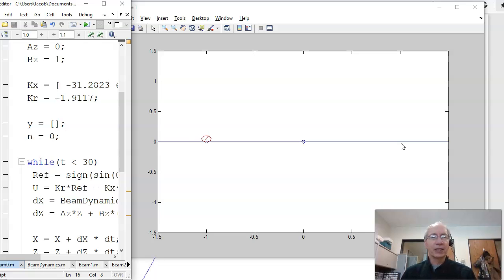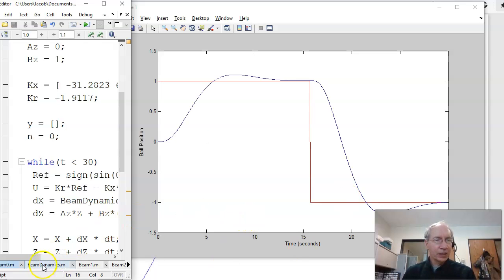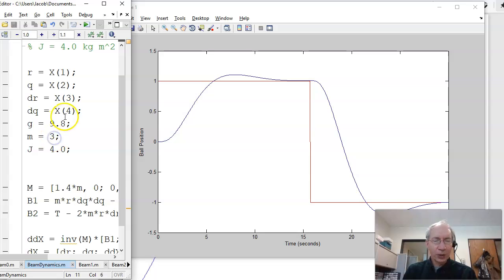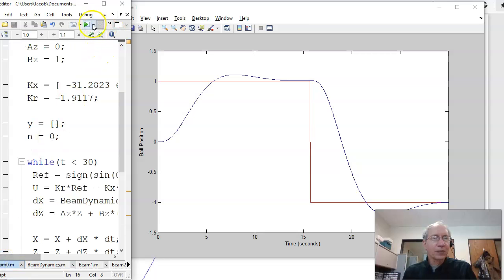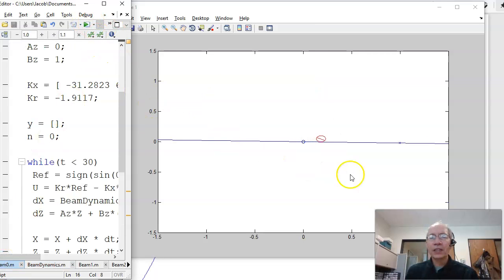That's when I have the nominal mass. Let's change it so the mass is now 3.5 kilograms. See what happens. In this case, I have extra mass on the ball that causes it to miss my target. Actually, by a lot, it goes off to infinity.